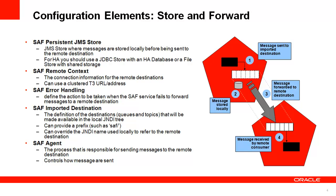There is also the Store and Forward error handling, which defines the policy or the actions to take when the Store and Forward service fails to forward a message to the remote destination. You can redirect it, log it, or ignore it, although we would not advise you to ignore it. Then finally, we have the Store and Forward imported destination, which defines the remote destination that has been imported. You can prefix the JNDI name with a unique string such as SAF for Store and Forward. And finally, there's the Store and Forward agent, which is the process responsible for sending messages to the remote destination. Here you can set settings that control how the messages are sent to the remote domain.